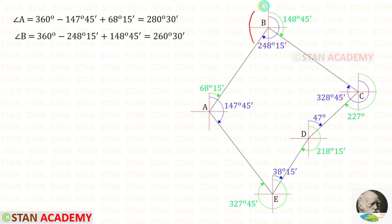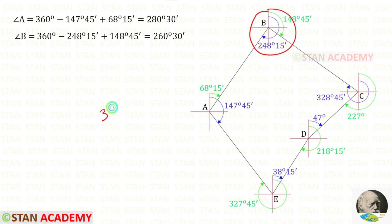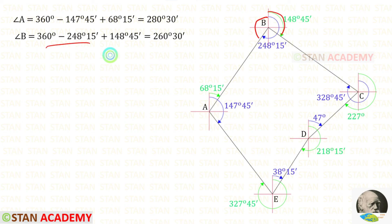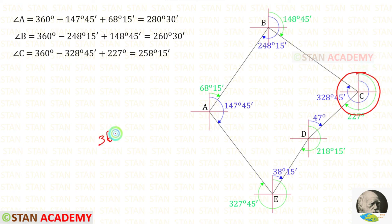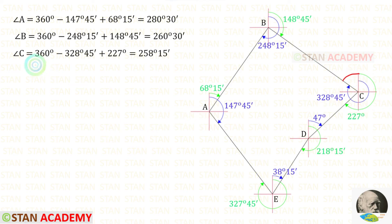Now let us find the exterior angle at station B. The right side is known; for the left side: 360 degrees minus 248 degrees 15 minutes gives that angle. Adding both parts gives the exterior angle at B. For station C, we know one angle; the other is found by 360 degrees minus 328 degrees 45 minutes. Adding both parts gives the exterior angle at C.